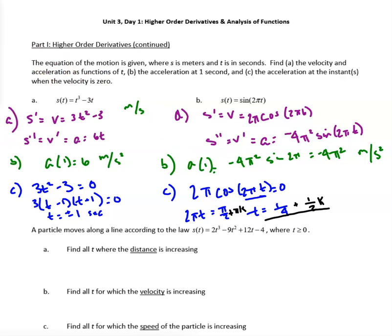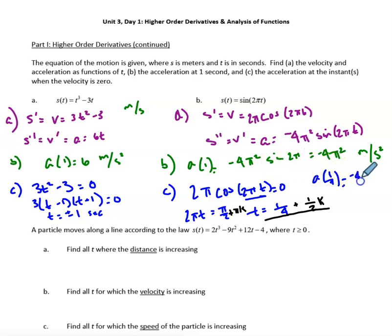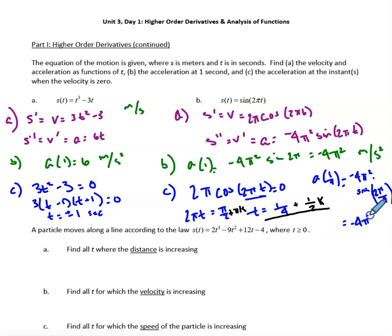Evaluating acceleration at t equals 1/4: acceleration at 1/4 equals negative 4π squared times sine of 2π times 1/4, which is sine of 2π/4, or sine of π/2, which equals 1. So the acceleration is negative 4π squared meters per second squared.